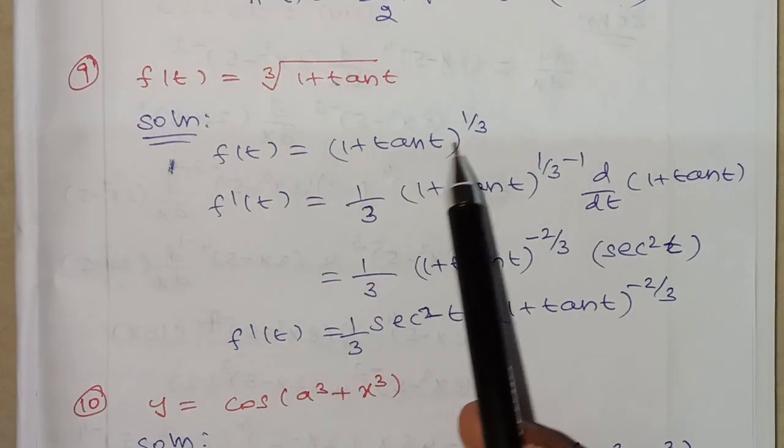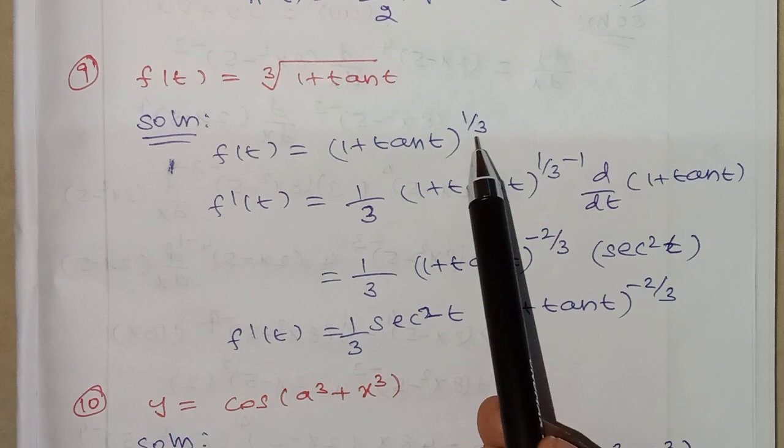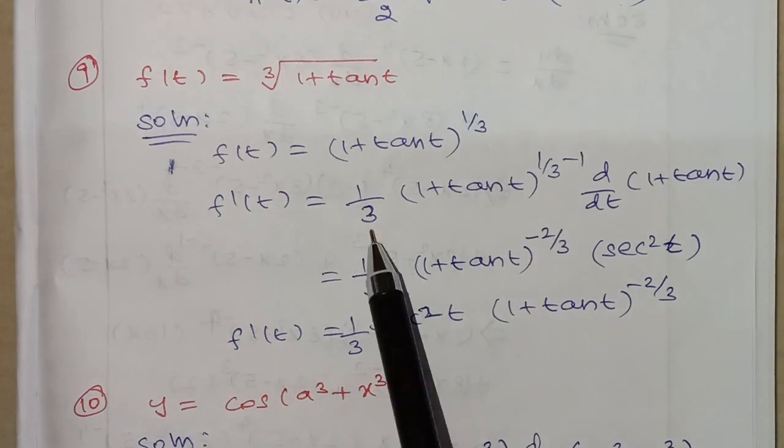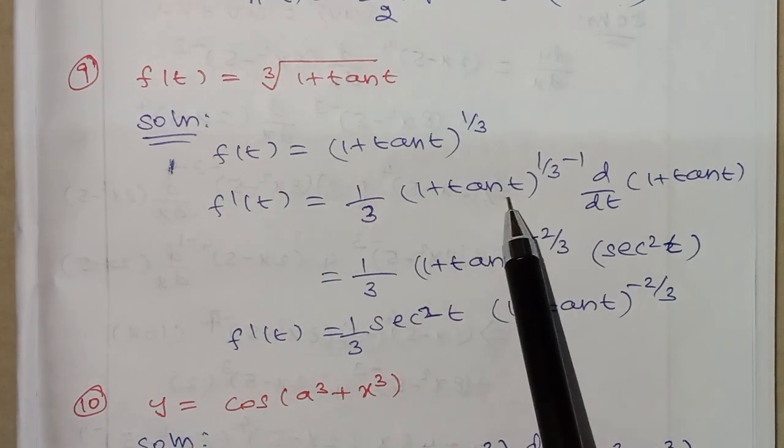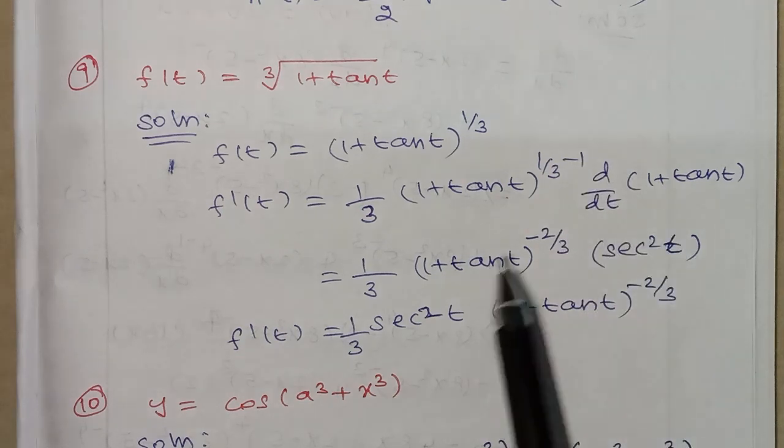So first, 1 plus tan t whole power 1 by 3. Derivative: 1 by 3 into 1 plus tan t power 1 by 3 minus 1.